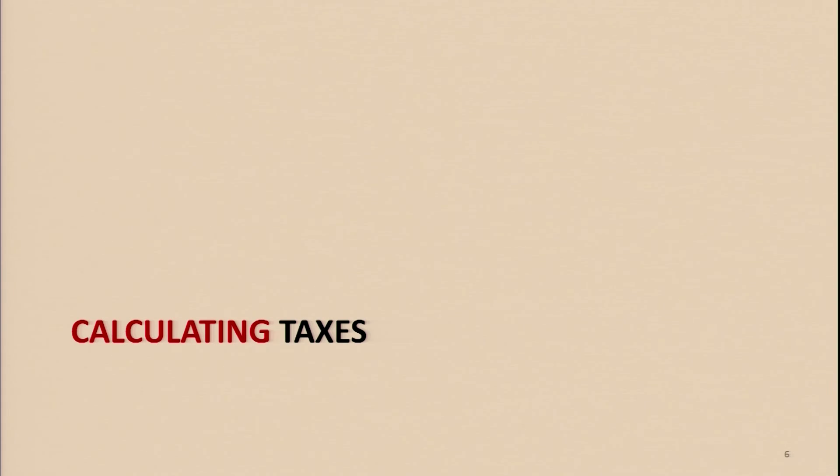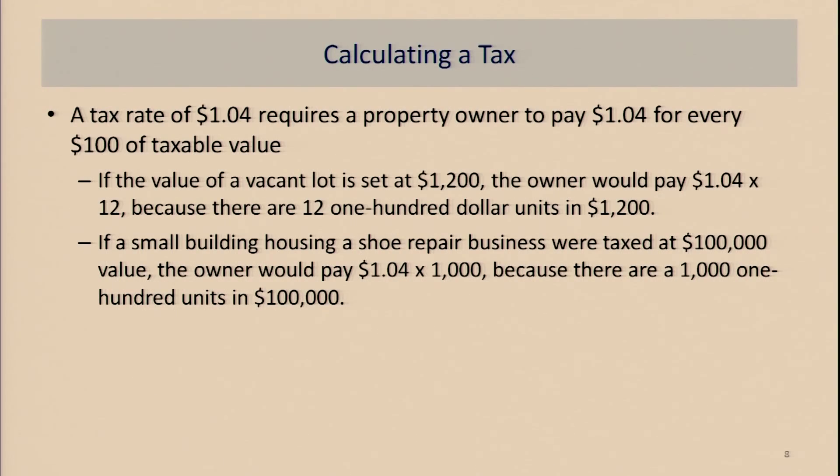Now we're going to shift gears and talk about calculating taxes. The key point is that you have taxable value you're going to tax, and our system applies a tax rate per $100 units. How many $100 units are in that taxable value? For example, a vacant lot valued at $1,200 has twelve $100 units. At a $1.04 tax rate, you take $1.04 multiplied by 12 — that's the tax owed on that $1,200 lot.